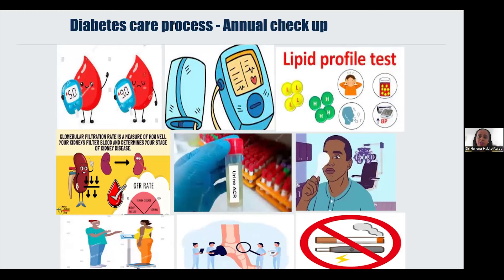All people with diabetes aged 12 and over should have all nine care processes. These include: HbA1c — a check of average blood glucose over the past three months — blood pressure check, cholesterol check looking at fats in the blood, both a urine test and a blood test for kidney function, eye screening, foot inspection, and weight and height measurement. These care processes aim to provide comprehensive, holistic care to individuals with diabetes, focusing on preventing complications and optimising health outcomes.